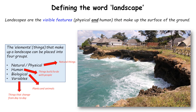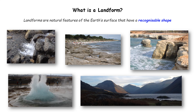Let's have a quick summary of what we've learned today. Landscapes are the visible features making up the surface of the ground in an area of land. We can categorise the things that we can see into natural, human, biological, or variables. Landforms are recognisable shapes within landscapes — examples being a waterfall, a beach, or hills and mountains.